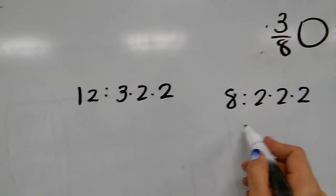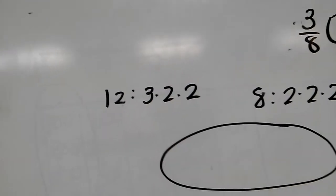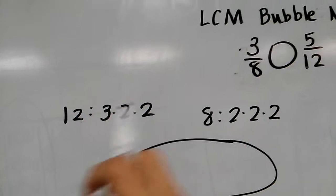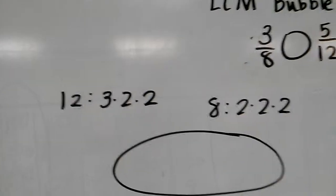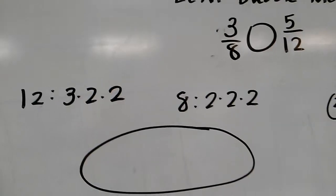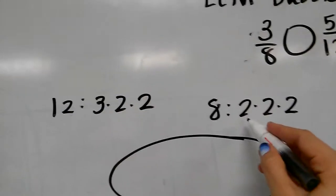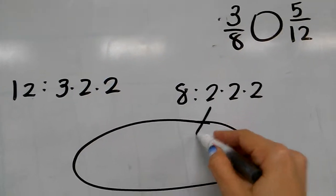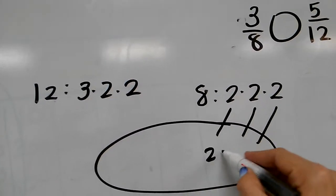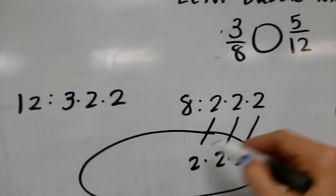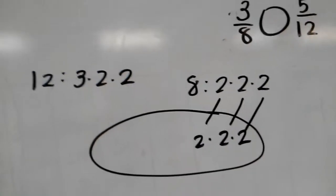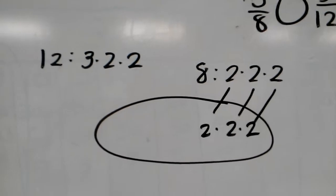So then what I do next is I draw a bubble. I choose either one of these to put all of the factors into the bubble, doesn't matter which one I do. So in this case I'm going to put in all of the factors of 8. I draw the lines just so I know which numbers I put into the bubble. So I put in 2 times 2 times 2.